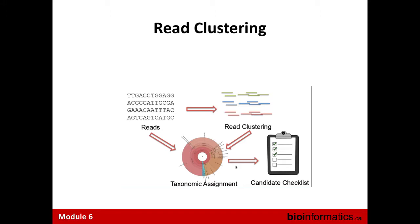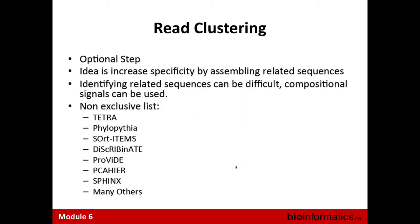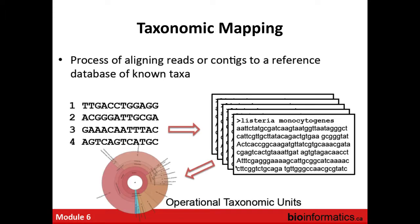Once taxa are identified, we can consult with clinical microbiologists who know much more about the symptoms these diseases manifest. They help identify a possible etiological agent for the disease being investigated. The re-clustering step is optional but recommended. Several programs are available to assist with this clustering step. Once we have either individual read phylotyping or clusters, we proceed to the taxonomic mapping step.